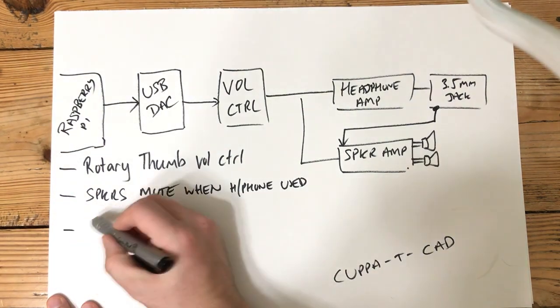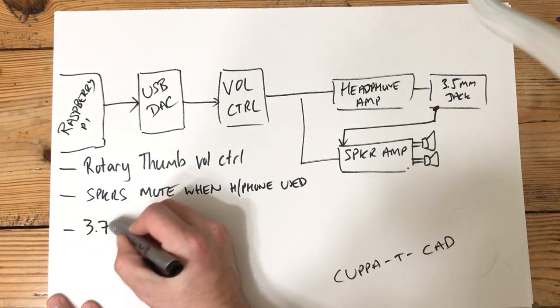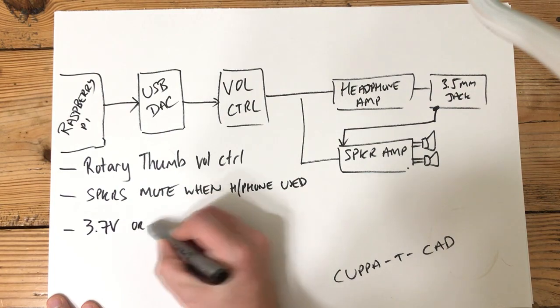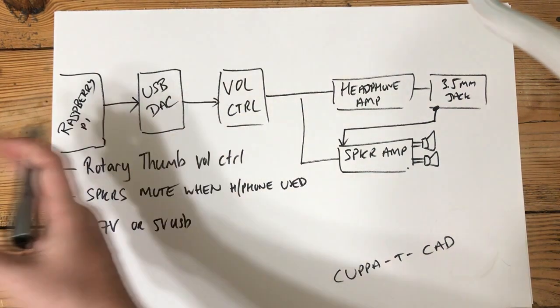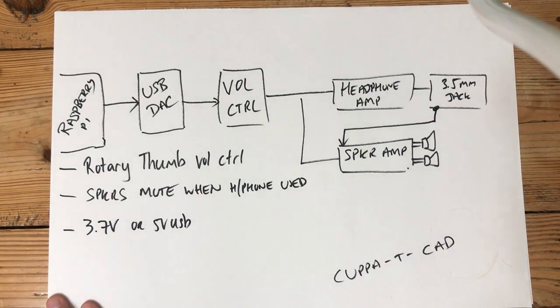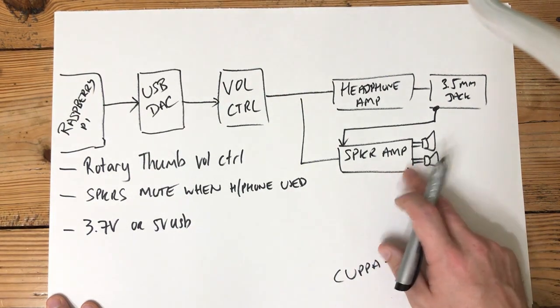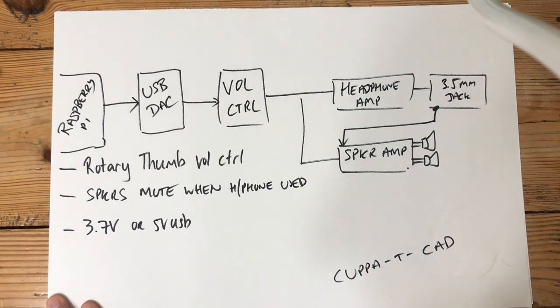I'd like for this to be able to run off either a 3.7V supply or a 5V USB. So the USB DAC, of course, will have to run from the Raspberry Pi, but I'm worried about things like this speaker amplifier. This is a portable product was initially designed for a portable product. So ideally, I really want to be able to avoid having to run this essentially buck converter from the boosted supply over here. That would be a real waste.